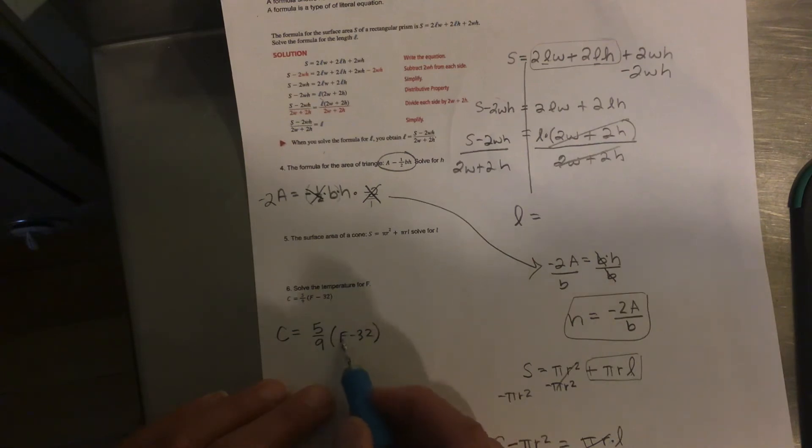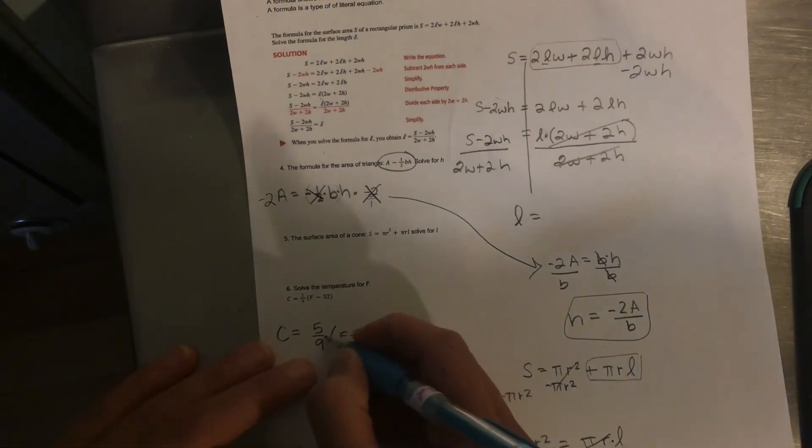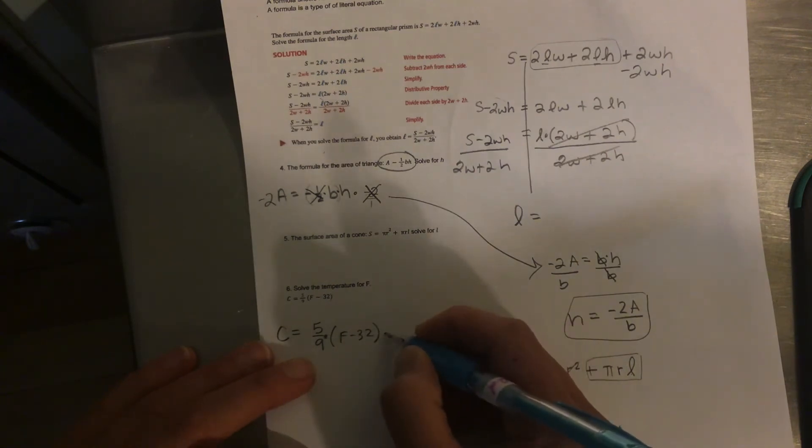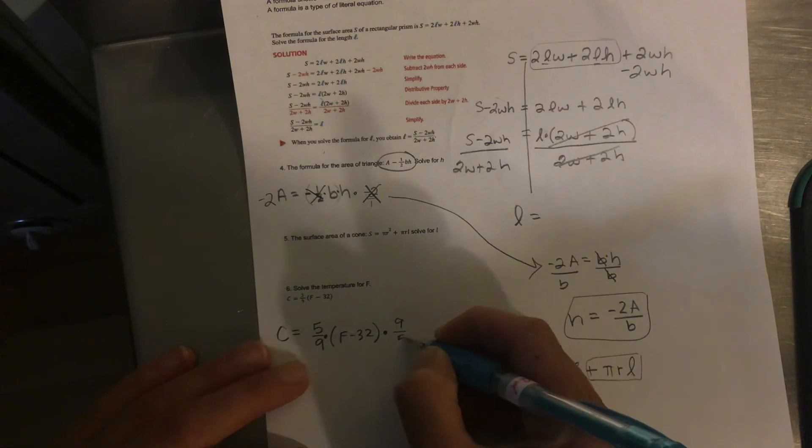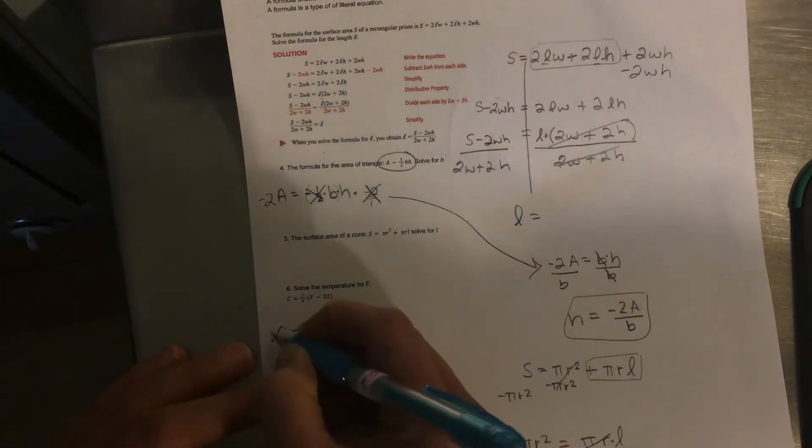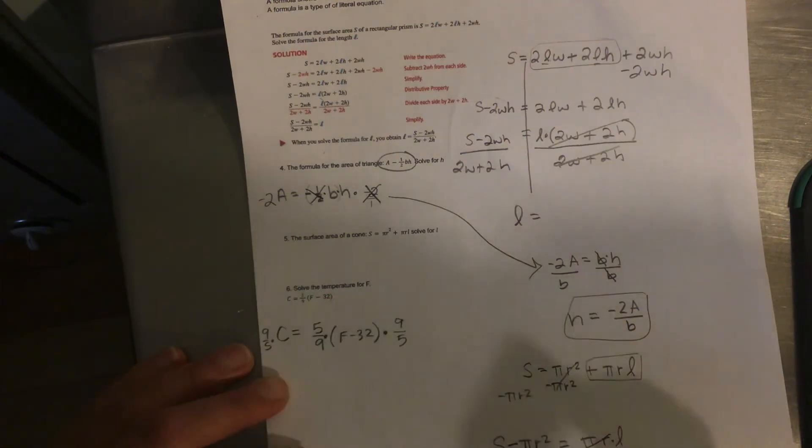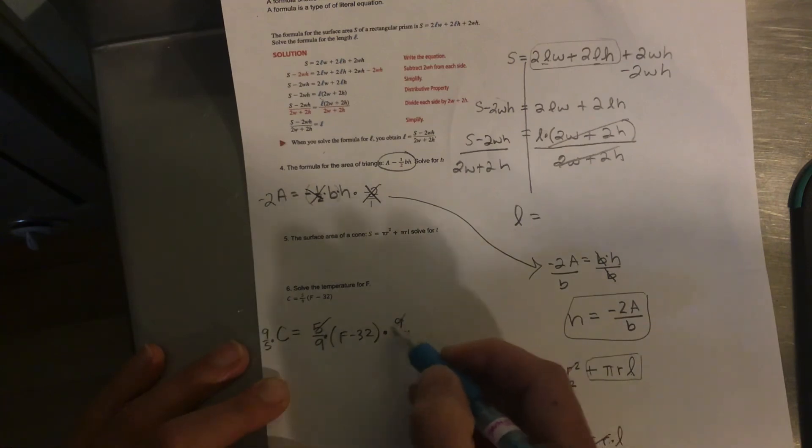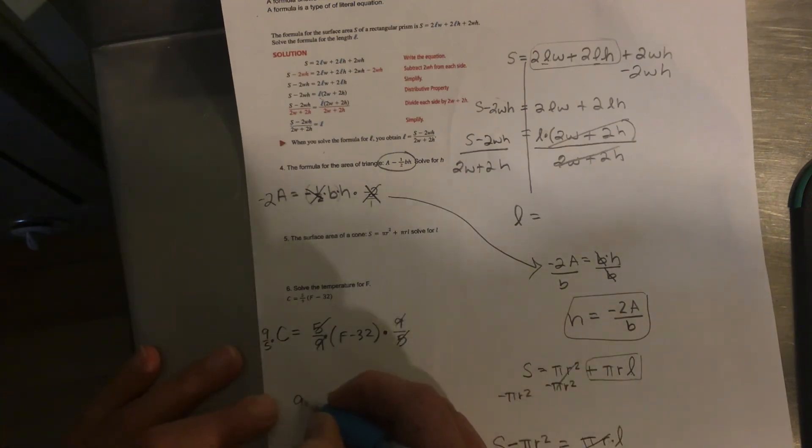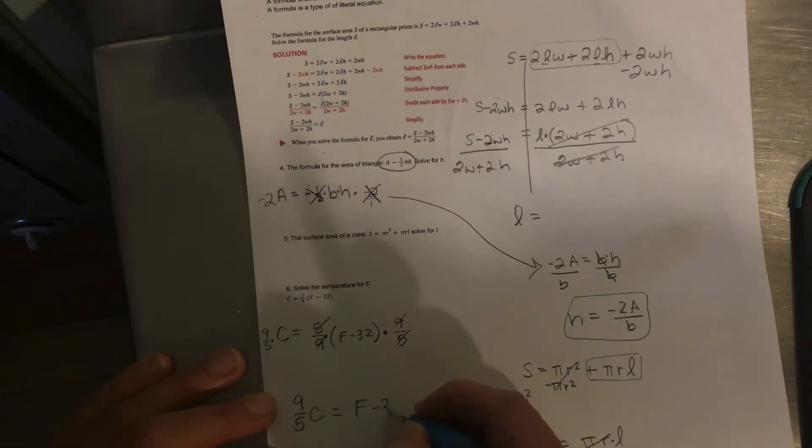So remember, this is solving for F. We've got to unfold this problem. So we work backwards from PEMDAS. So parentheses can't happen first. They happen last. So since that's multiplying, we do the opposite. And the opposite of multiplying by a fraction is multiplying by the reciprocal. And if I multiply that side, then I multiply this side. Those cancel. So nine fifths C is equal to F minus 32.